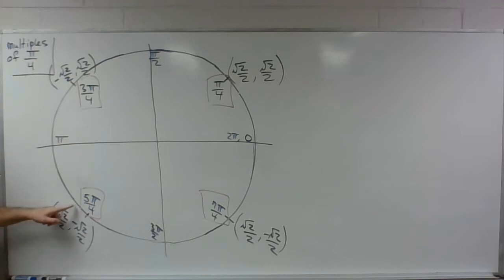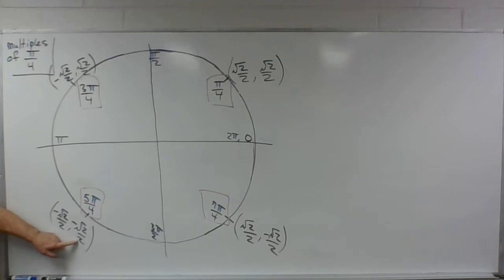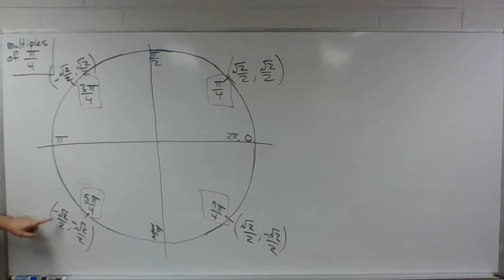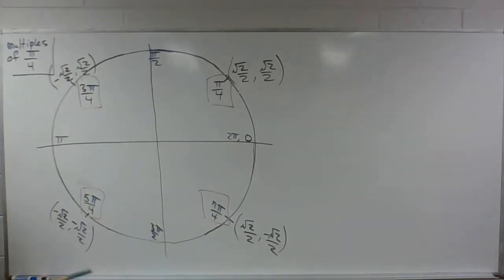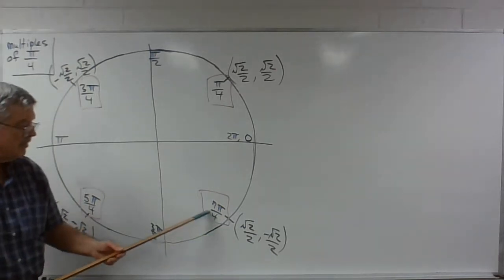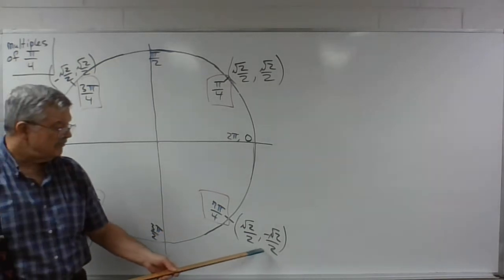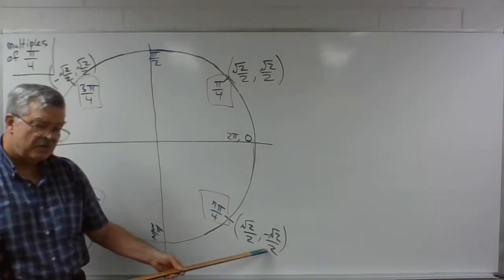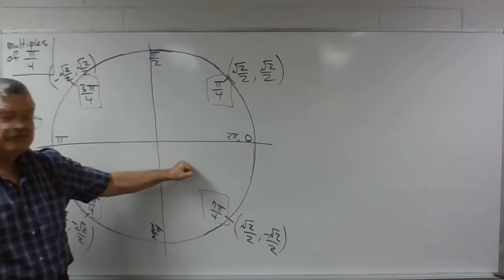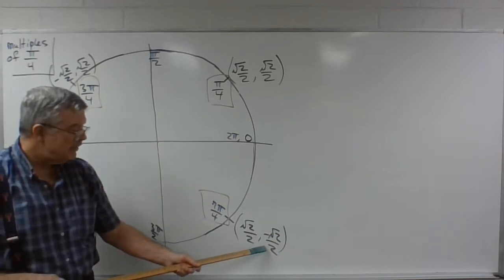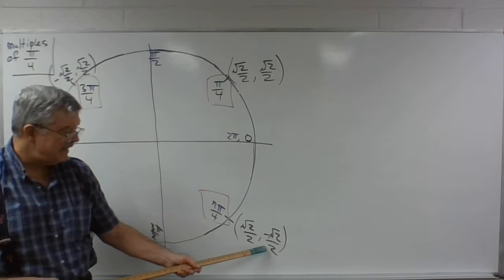In the third quadrant, the cosine is square root of 2 over 2 and the sine is square root of 2 over 2. Because we're in the third quadrant, both the x-coordinate and the y-coordinate are negative — both cosine and sine are negative. In the fourth quadrant, 7 pi over 4, the cosine and the sine are square root of 2 over 2, and because we're in the fourth quadrant, we make the y-coordinate or the sine negative.